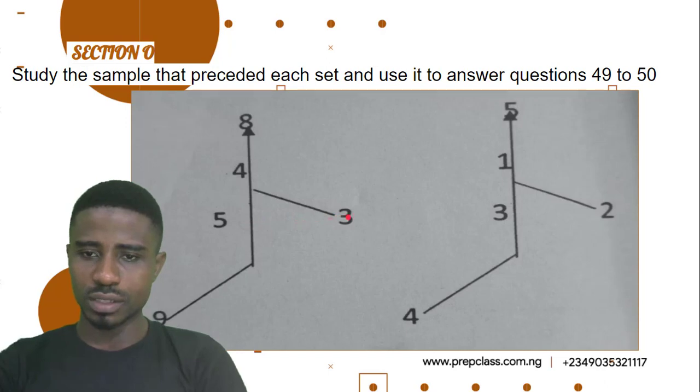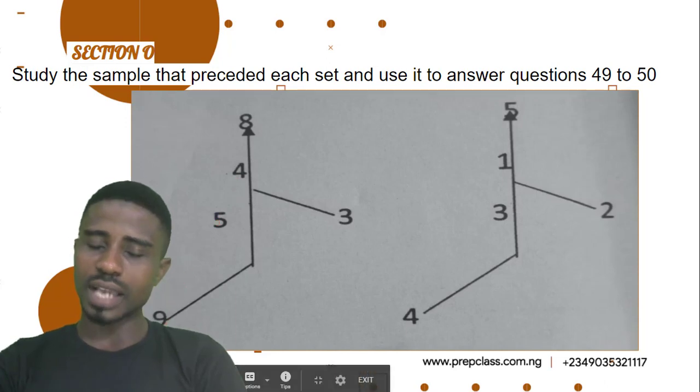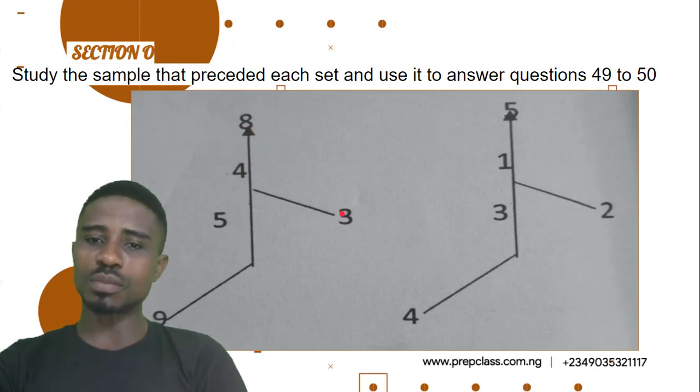I'll say 5 plus 3 is 8. That's true. 4 plus 5 is 9. So if 5 is missing, I'll say 9 minus 4 will give me 5. If 4 is missing, I'll say 9 minus 5 will give me 4. If 3 is missing, 8 minus 5 will give me 3. And if 5 is missing, 8 minus 3 will give me 5. That's correct.